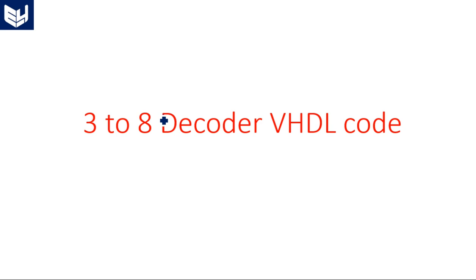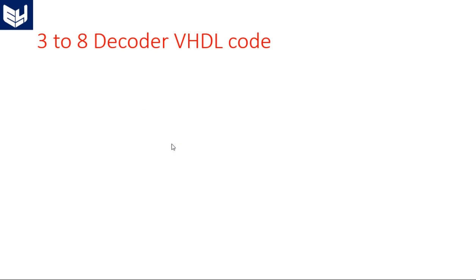Hi everyone. In this video I am going to tell you how to write a VHDL code for a 3-to-8 decoder. As we have seen in the previous video, based on the logic diagram and truth table, we can derive some equations. Based on those equations, I am going to write the VHDL code for the data flow model. In this video we are going to learn the data flow VHDL style of this 3-to-8 decoder, as well as a behavioral model if time permits.